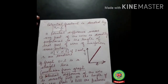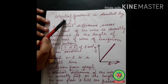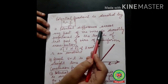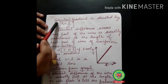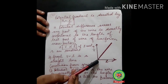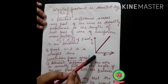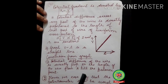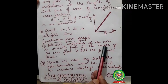Potential gradient is denoted by K and is given by K = V / L. So the potential difference across any part of the wire is directly proportional to the length of the wire. As seen from this graph, with the change in length the voltage changes — if the length is increased, the voltage is increased — hence the graph is a straight line.